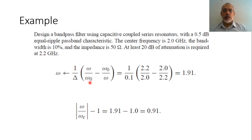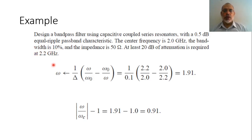In this case, the value of omega_0 is 2 GHz, the value of omega is 2.2 GHz, and delta is 0.1, the bandwidth. The corresponding frequency of 2.2 GHz mapped to the low-pass filter prototype is 1.91.